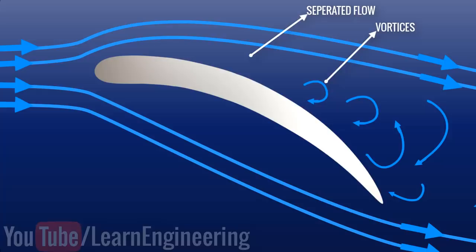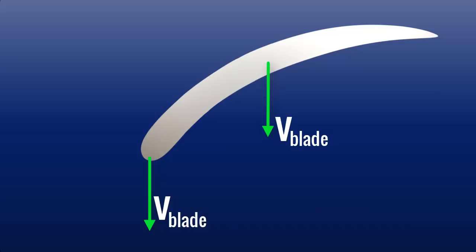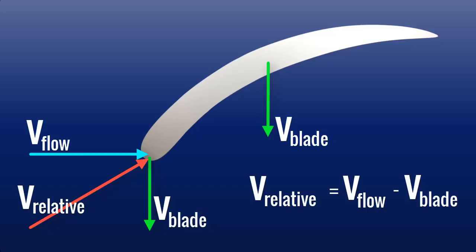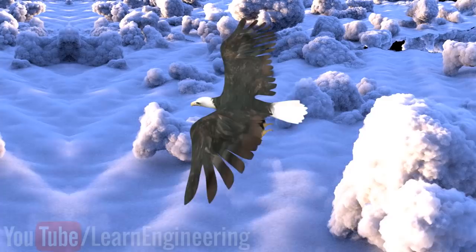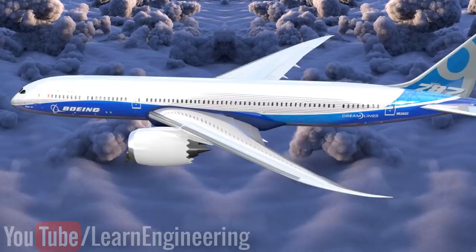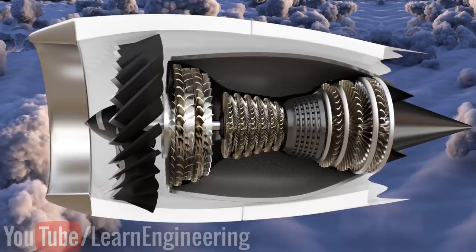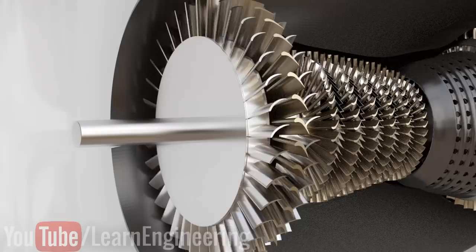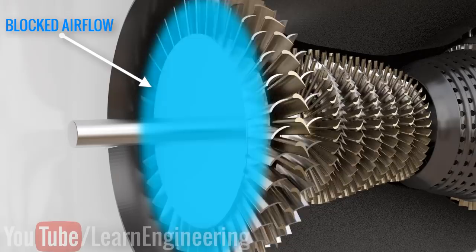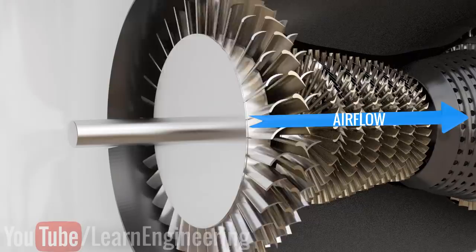It should be noted that with a rotating blade, the angle of attack is relative to the motion of the blade. Now consider the situation in a bird strike. The obstruction caused by the bird disturbs the flow pattern at the engine inlet and can drastically change the angle of attack at the compressor inlet. If this angle of attack is too high, it results in flow reversal and compressor stall. During a compressor stall, the compressor is no longer able to force the incoming air into the combustion chamber.